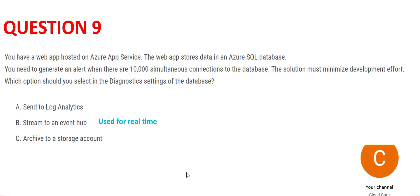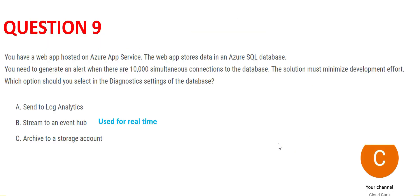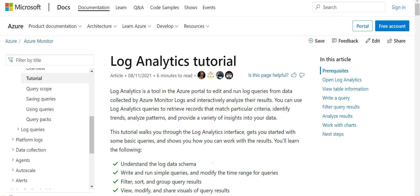Option C suggests archiving to a Storage Account. If I send archives of this data to the Storage Account, that will not help with sending alerts. I would have to retrieve the archive, run some program or Azure Functions, and then maybe send alerts. But if I have a straight mechanism using Log Analytics to go from point A to point B directly, why take a complicated route? Hence, C is wrong.